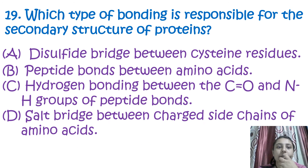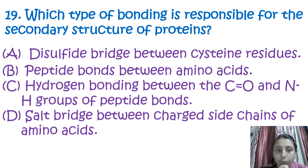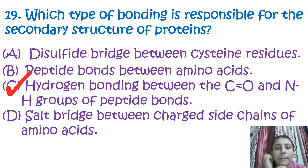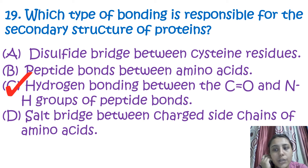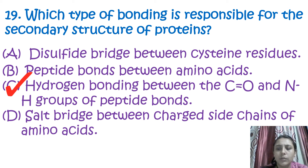The next question is: which type of bonding is responsible for the secondary structure of protein? The correct answer is hydrogen bonding — specifically between the carbon-oxygen bond and nitrogen-hydrogen groups of peptide bonds.